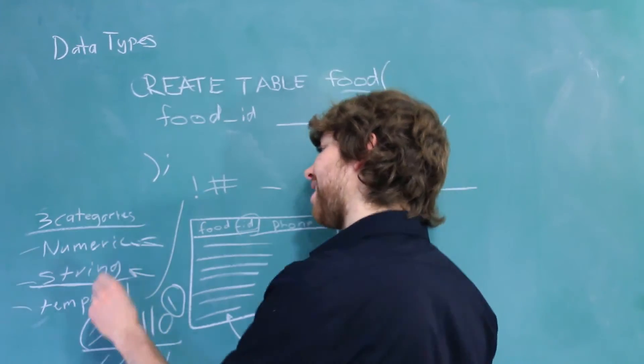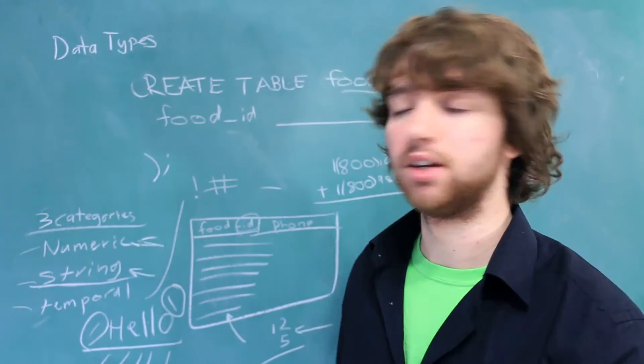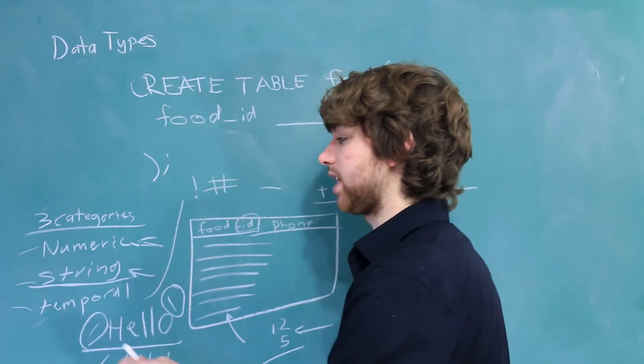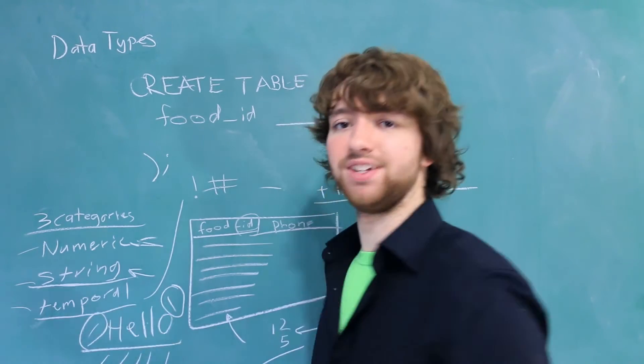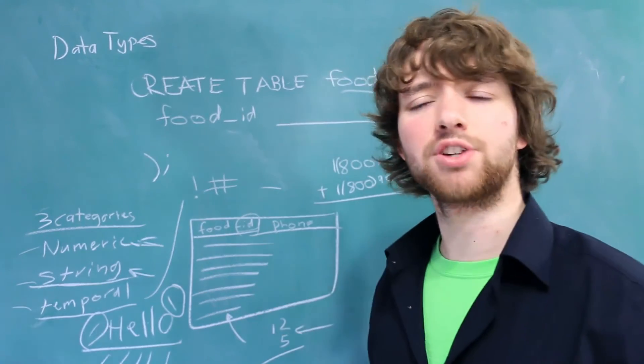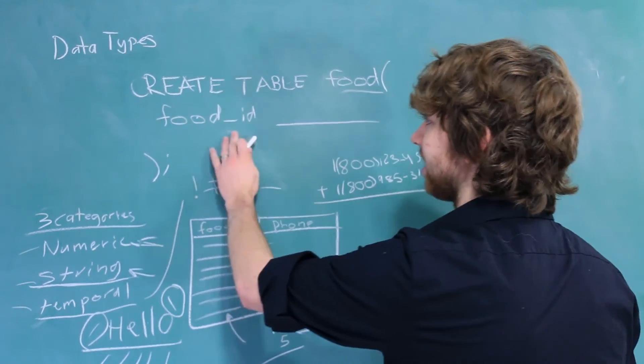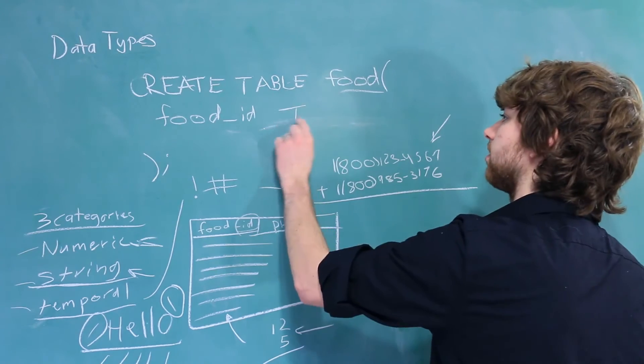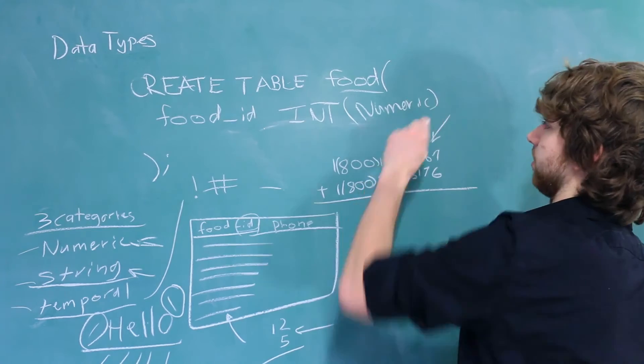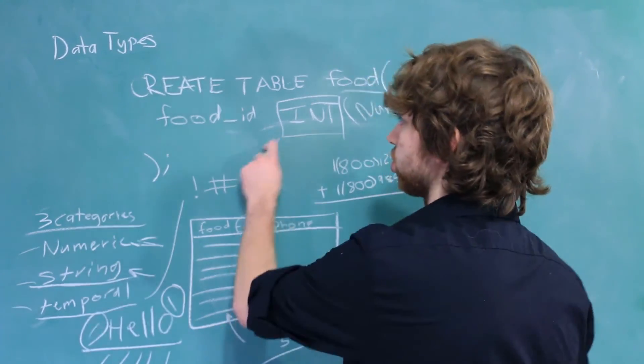And lastly, we have the temporal data type. This is anything dealing with dates and time. So if you think you want to store a date or the time that something was done, you will want to use a data type that is of the temporal category. And as always, the categories kind of just help us out. But we don't actually have to tell the database what category we are using. For example, in this create table, if we put something here, such as int, that's enough for the database. We don't have to say int numeric or something. It's redundant because that's all the database is going to need to know how to treat this column.